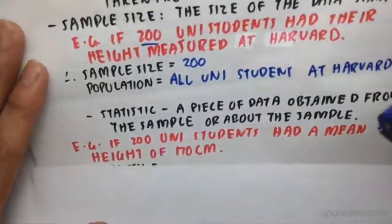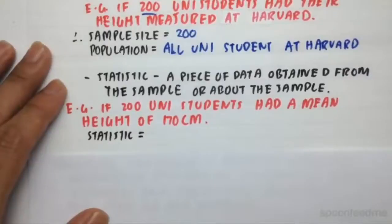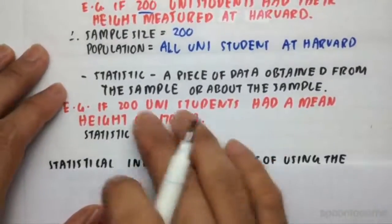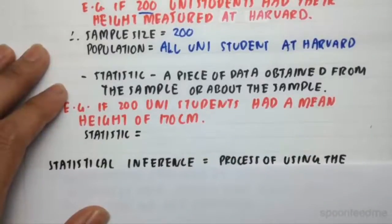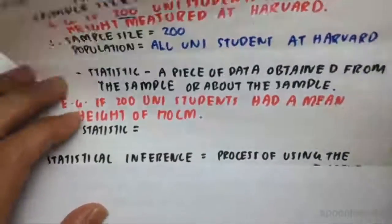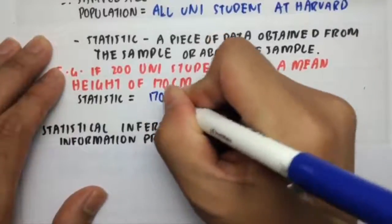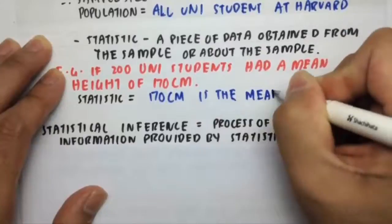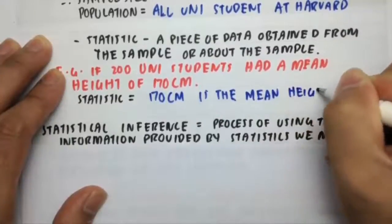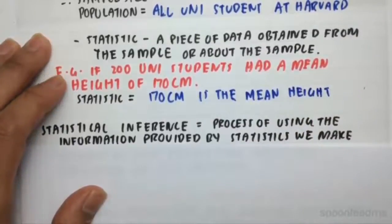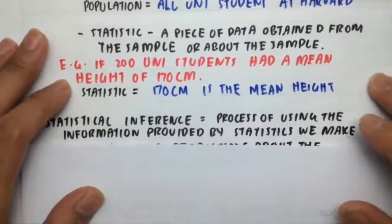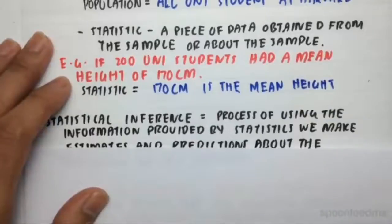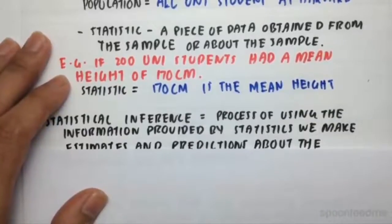So for example, if 200 university students had their heights measured at Harvard, the sample size will be the size of our sample, which is 200. The population will be all university students at Harvard. And then we move on to a statistic. So a statistic is a piece of data obtained from a sample or about a sample. So for example, if 200 university students had a mean height of 170 centimeters, the statistic would be 170 centimeters is the mean height.